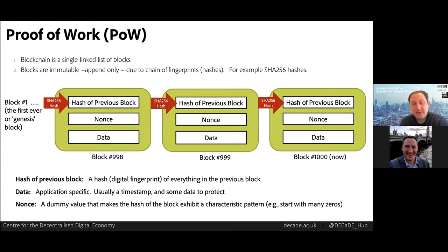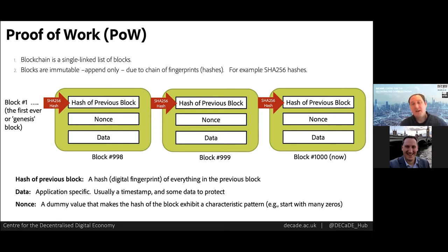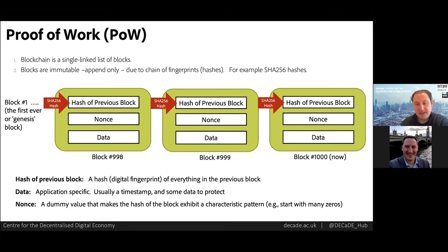If we edited the chain part way along, it would take so long to recompute all the blocks to the end that, by then, someone else on the network would have mined the next block and added it. The rule is that the longest chain wins as the authoritative data store. This kind of blockchain is called proof of work, or PoW. The proof that you've done the work is the discovery of the nonce — the so-called golden nonce — which gives you the right to add the next block.